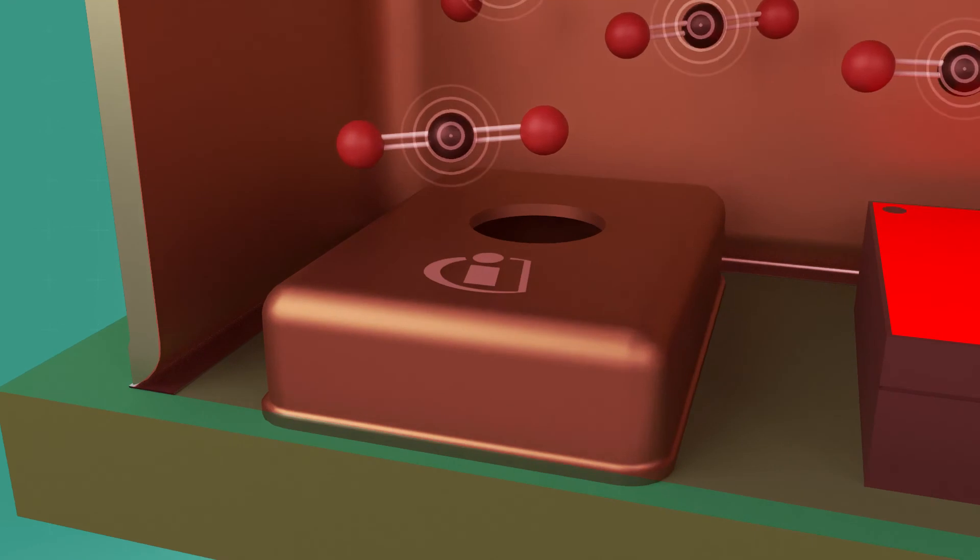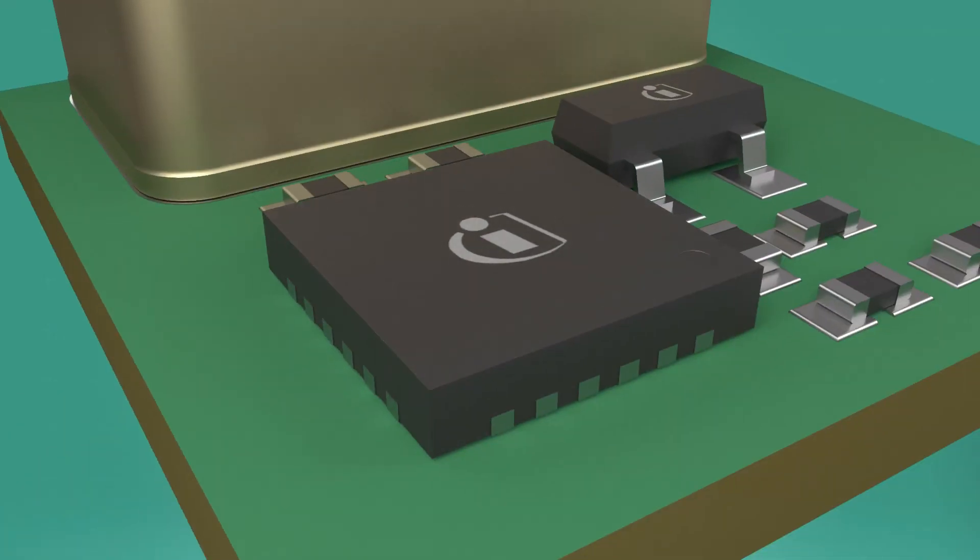An Infineon Zensiv MEMS microphone with an exceptionally high signal-to-noise ratio is placed inside the absorption chamber and detects these very small changes in pressure. An integrated microcontroller converts the MEMS microphone output into a CO2 concentration reading.